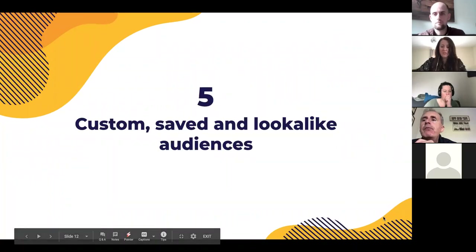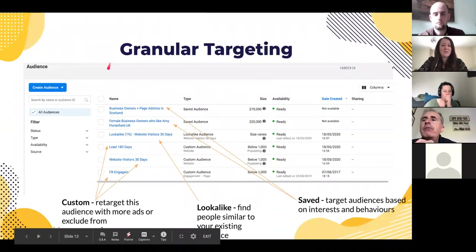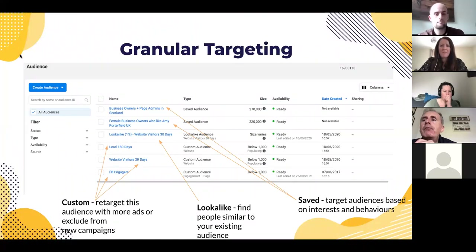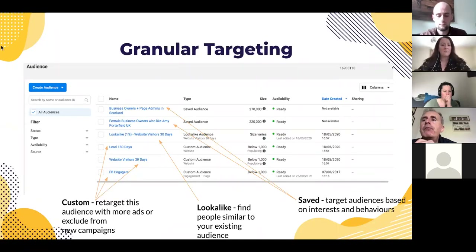Custom, saved, and lookalike audiences — these are the three different audience types in Facebook. You can create them in the Audiences tab of Ads Manager or when looking at Ad Sets. I usually create mine in the Audiences tab first, because that's where you should always begin — who is my target audience? If you've had the pixel on your website, you should absolutely be looking at your website visitors.